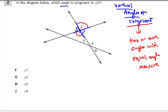I almost picture the intersection of the lines as the shape of the letter X. Angles that are just across from each other are called vertical angles, and they're equal. In this diagram, angle five is congruent to angle four — they're both vertical angles. Angle three would be congruent to whatever angle is over here. So five and four are vertical angles, and one and two are vertical angles.